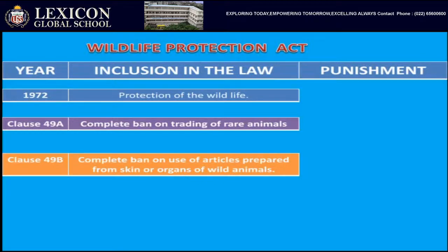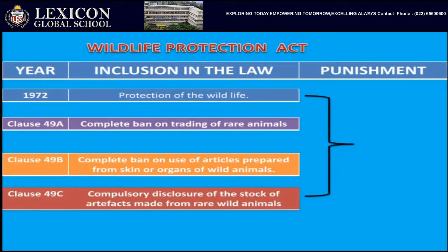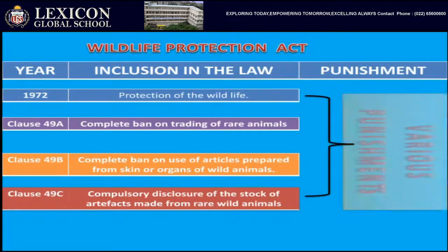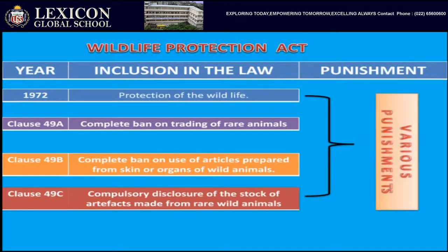The next clause, 49C, required compulsory disclosure of the stock of artifacts made from rare wild animals — such artifacts should be completely stopped. Any person, institution, or organization found not following this law faces various punishments: court cases, imprisonment, or fines of five to six lakh rupees.